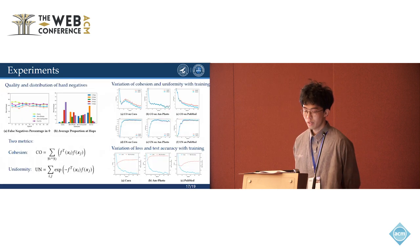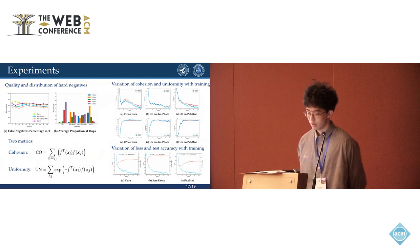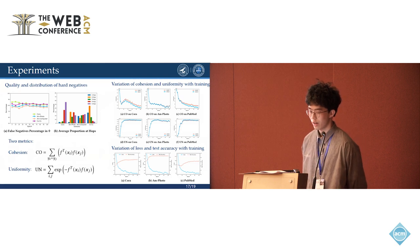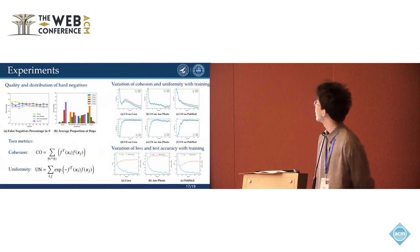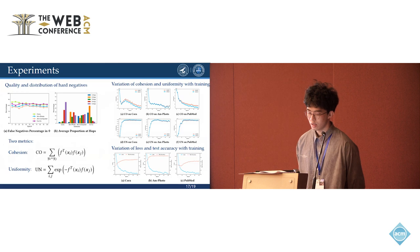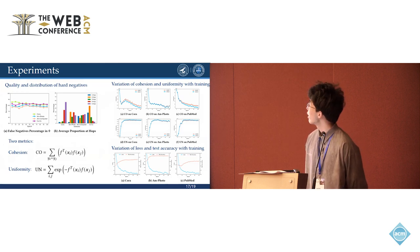When we use two metrics, cohesion and uniformity, GRIP has significant boost to its baseline GRACE. As we can see, the cohesion is largely improved, which means our method GRIP learns better category embeddings.